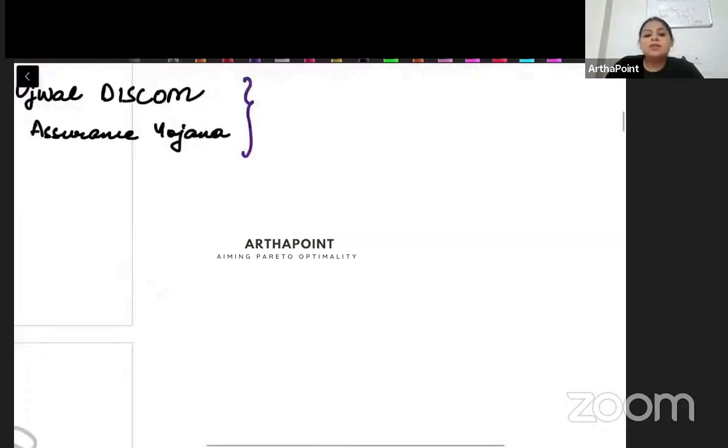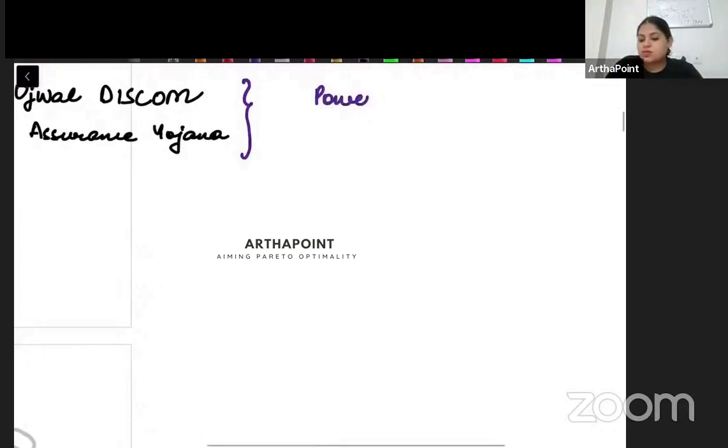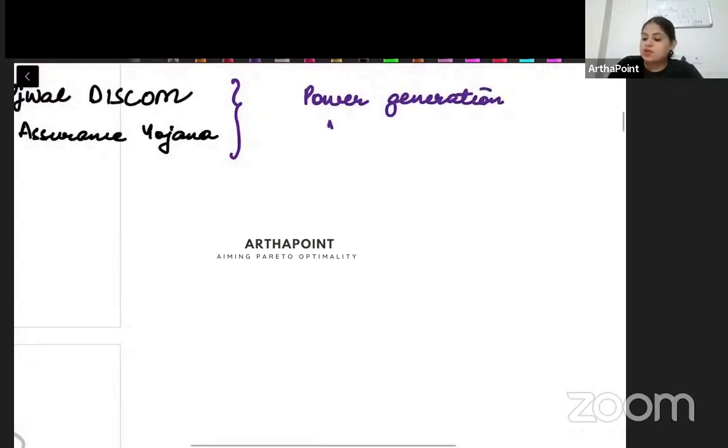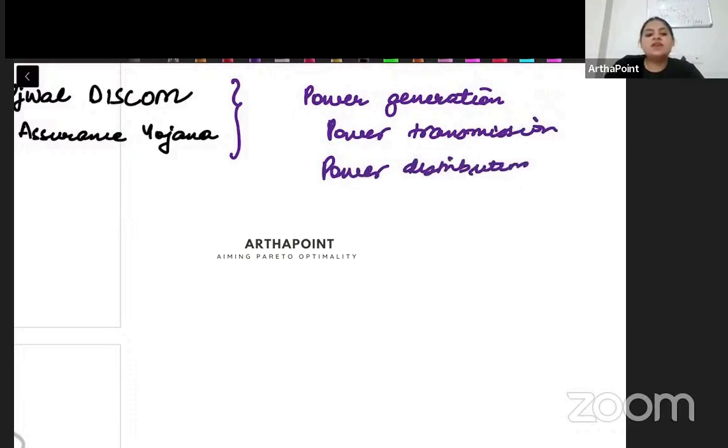But we have to look at it from our side, what is a Discom. So Discom is basically the distribution companies. If I talk about the power sector, the power sector basically has three levels. The power sector has three parts: generation, transmission and distribution. They go ahead and they look at power generation part. That is the role of the Discoms.